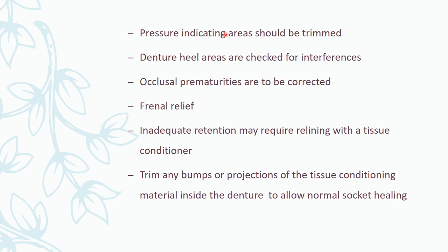Pressure-indicating areas should be trimmed. Denture heal areas are checked for interferences — any extra tissue must be taken care of and the corresponding area in the denture trimmed. Occlusal prematurities must be corrected; high points and frenal areas must be relieved. Inadequate retention may require relining with tissue conditioner temporarily, then with permanent relining material. Any projections should be trimmed.